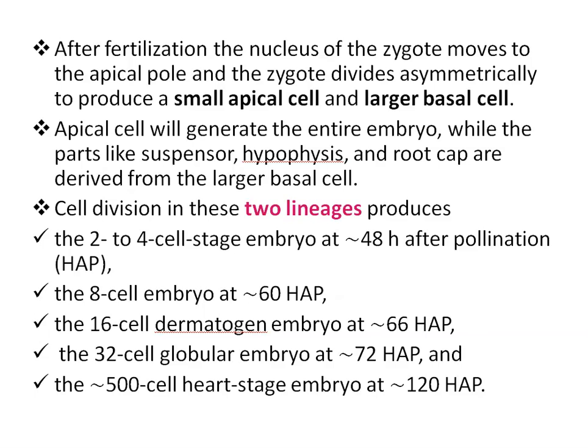After fertilization, the nucleus of the zygote moves to the apical pole and the zygote divides asymmetrically to produce a small apical cell and a larger basal cell. Apical cells will generate the entire embryo, while parts like the suspensor, hypophysis, and root cap are derived from the larger basal cell. Cell regions in these two lineages produce the 2 to 4 cell stage embryo at approximately 48 hours after pollination, the 8 cell embryo at approximately 60 hours, the 16 cell dermatogen embryo at approximately 66 hours, the 32 cell globular embryo at approximately 72 hours, and the approximately 500 cell heart stage embryo at approximately 120 hours after pollination.